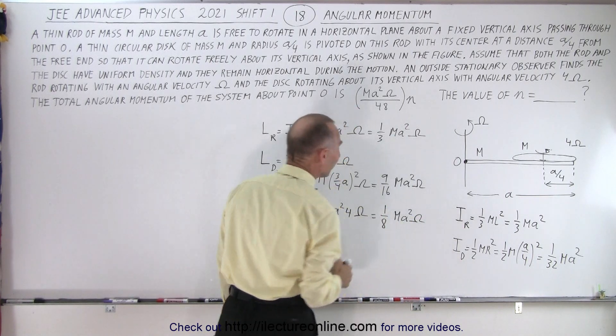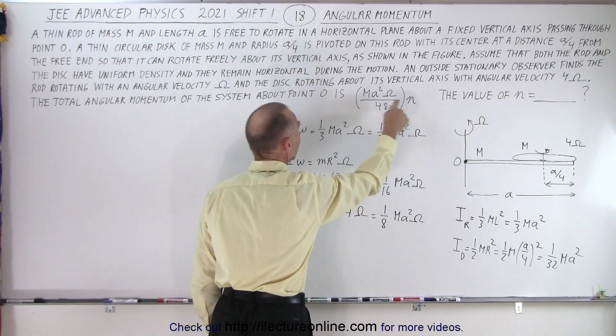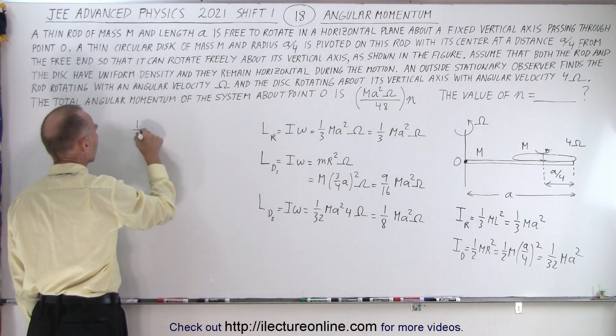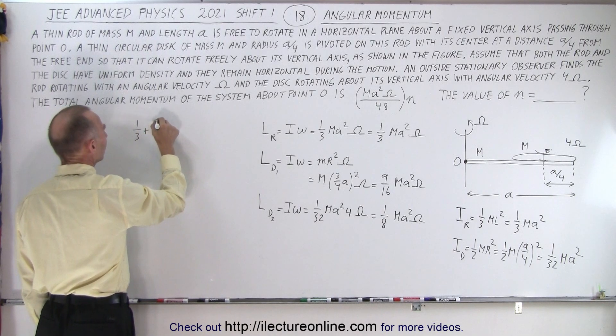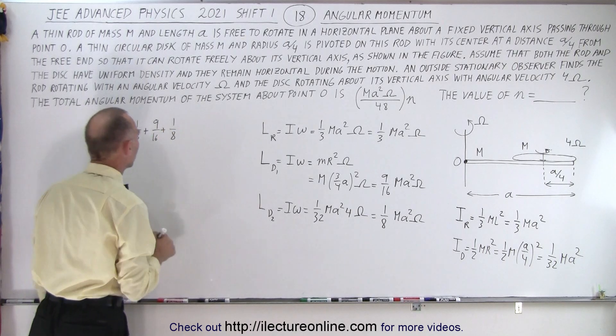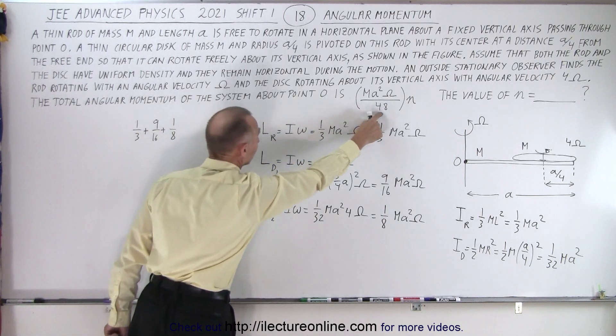So now we have to add up all the fractions together because we want to see 1 over 48 times n. So now we add 1 third plus 9 sixteenths plus 1 eighth. So the common denominator here would be 48. That's why we have a 48 over here.